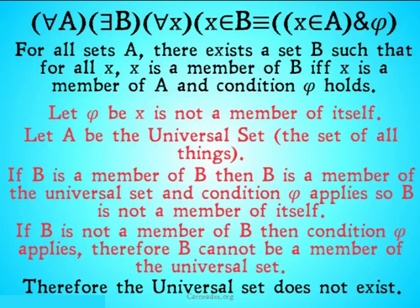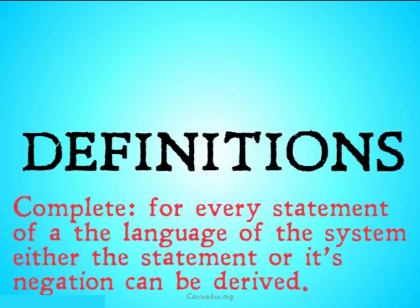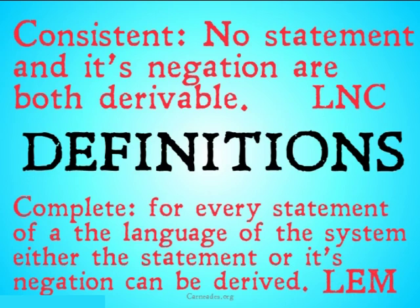This leads us to where we were trying to get: Gödel's incompleteness theorem. First, some definitions. A system is complete if, for every statement in the language of the system, either the statement or its negation can be derived. A system is consistent if no statement and its negation are both derivable. For those of you who like logic, think of consistent being the law of non-contradiction, that a statement and its negation can be derived, and a complete system being the law of the excluded middle, that all statements are either true or false, and they can be derived to be either true or false.